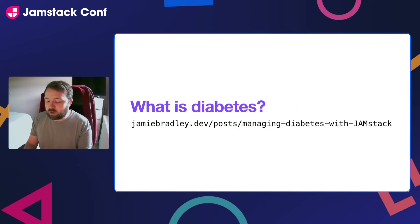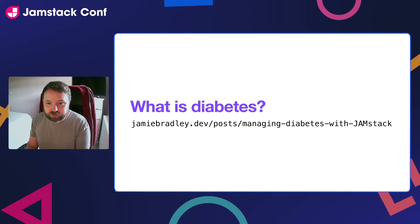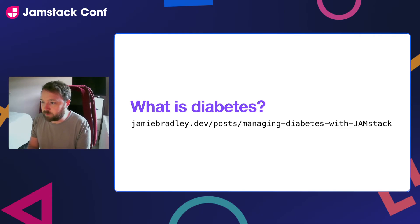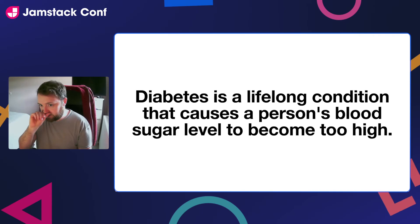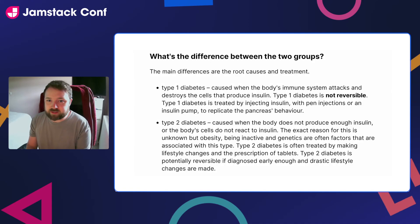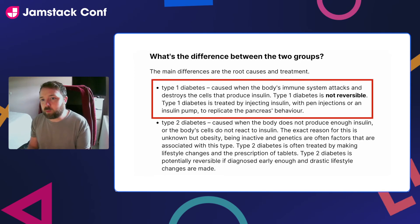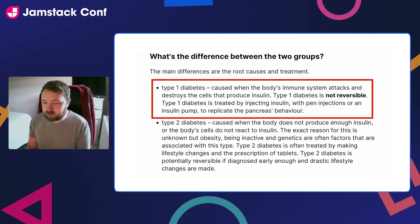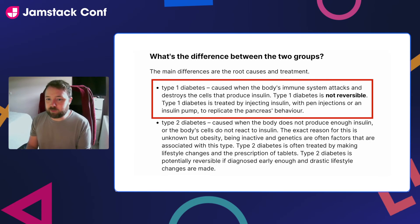So first we're going to talk about what diabetes is. We're not going to spend too long on this, but if you want to find out more information please check out my post on my website — the link is below. Diabetes is a lifelong condition that causes a person's blood sugar level to become too high, and diabetes is categorized into two groups. I personally suffer from type 1 diabetes, which means my body is unable to create a hormone called insulin — a hormone we need to regulate blood sugar levels inside our bloodstream.